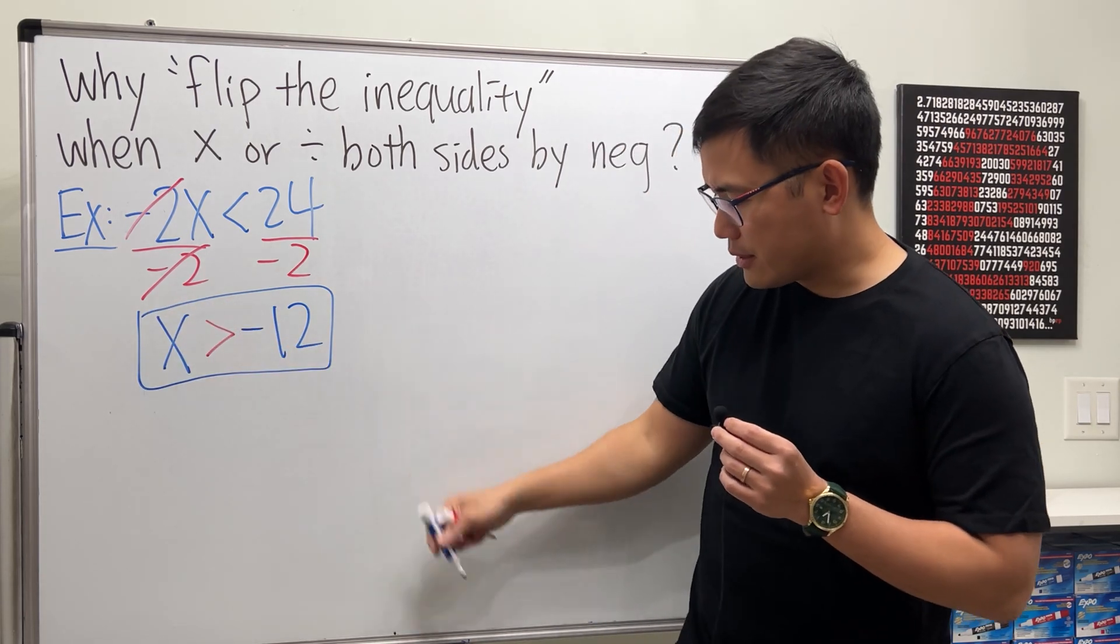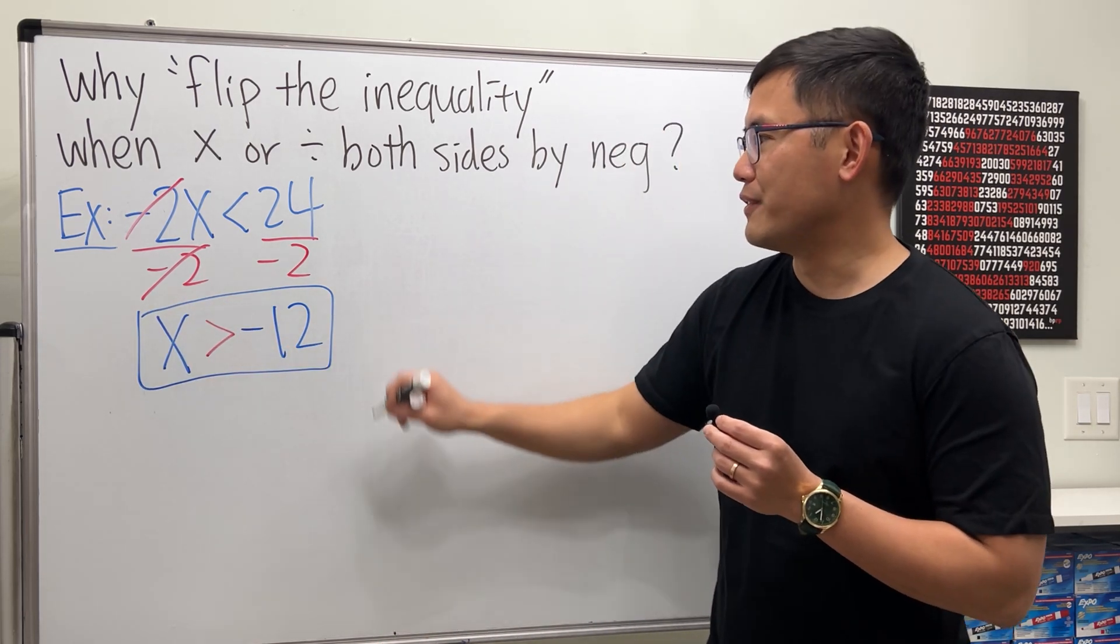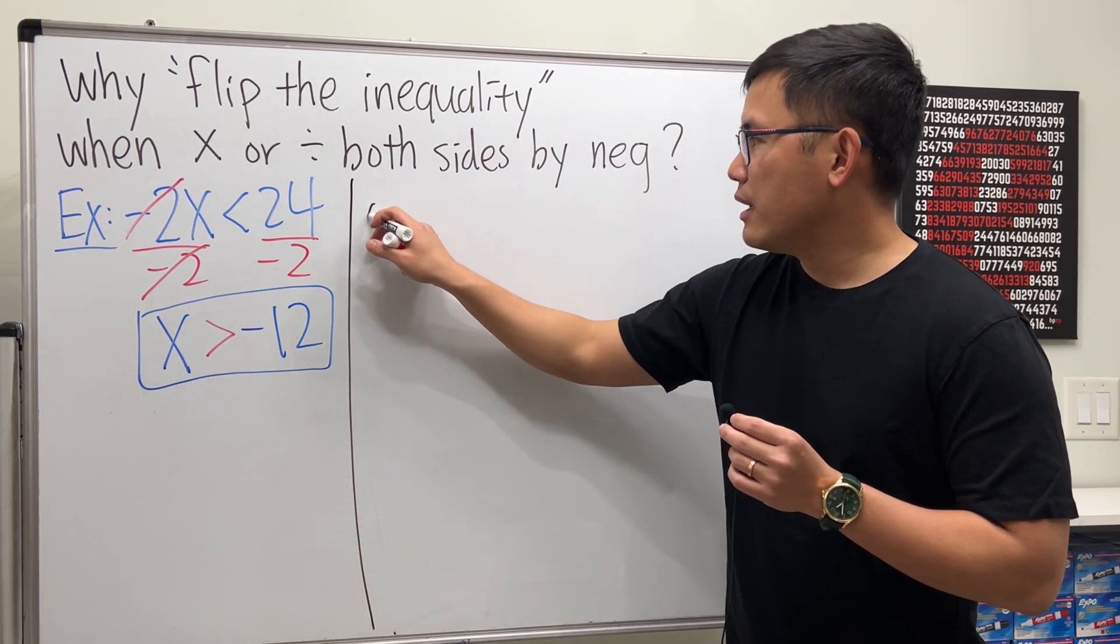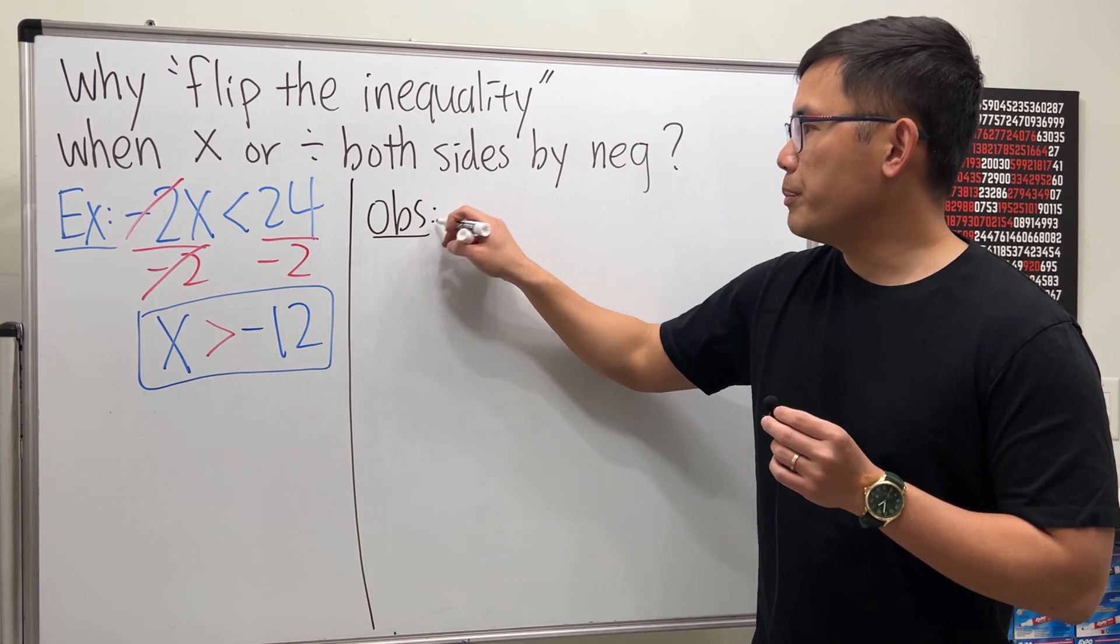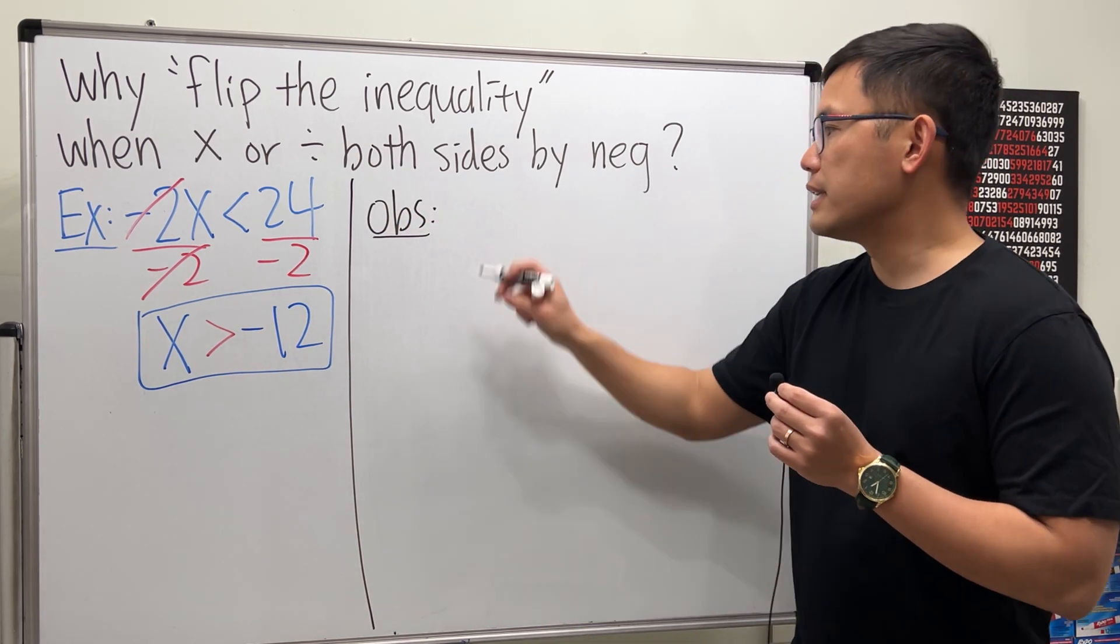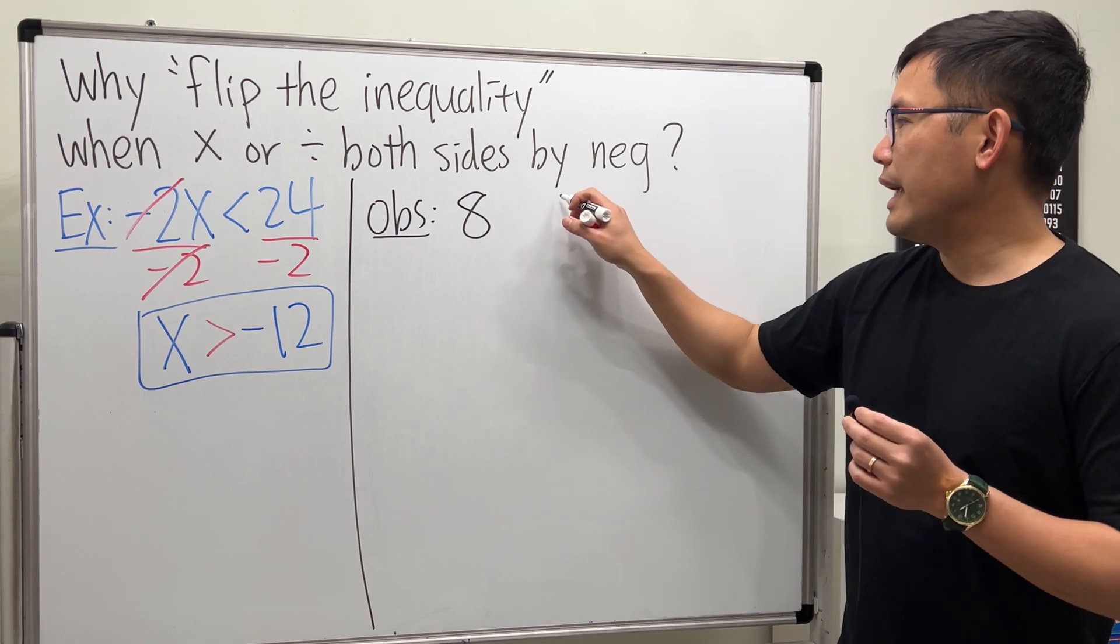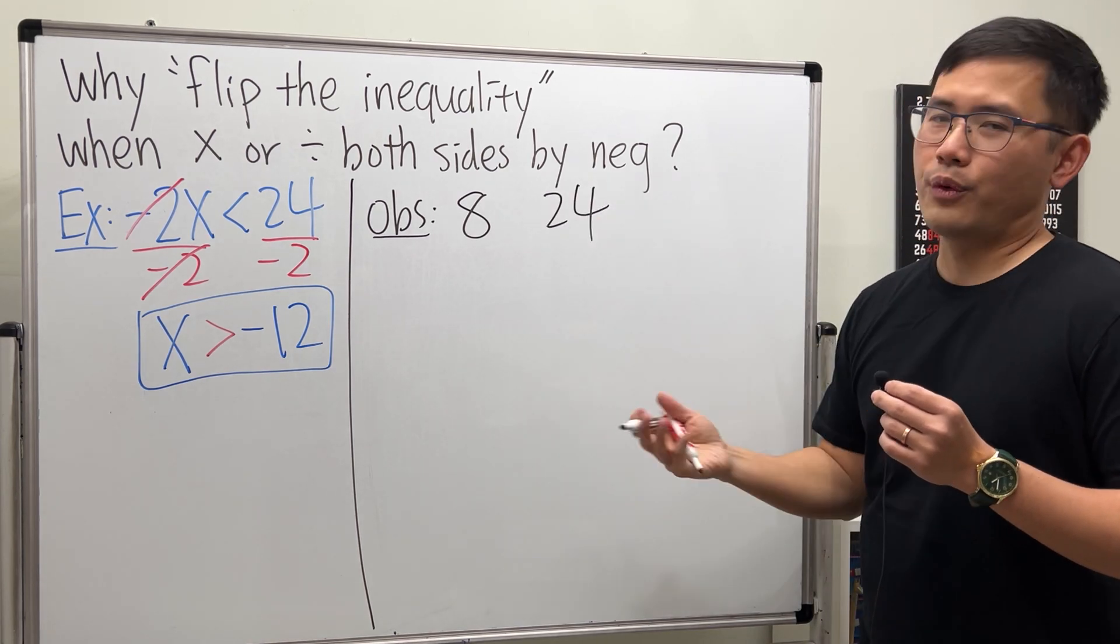But why do we do this though? Well, let's make some observations right here. Suppose I'm going to pick a number that's less than 24 first. Let's say 8. 8 and 24.